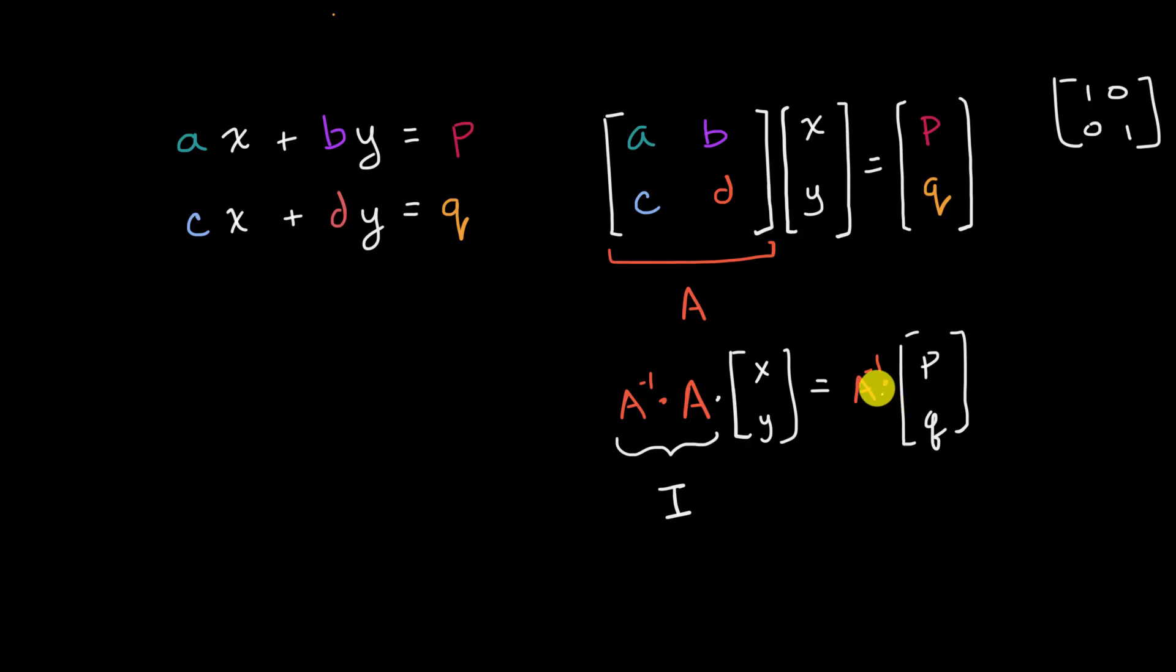And then on the right-hand side, we'll be multiplying a two by two matrix times the vector p, q. And so on the left-hand side, essentially the identity matrix times x, y is just going to give us x, y. And then on the right-hand side, we would know what that equals to. So that would essentially solve this system when it is represented that way.